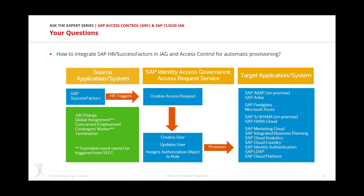Regarding HR SuccessFactors integration — in Access Control we have HR triggers that handle the joiner, mover, leaver process. If an employee joins the company, user accounts are created; if they change jobs, we do a user access review; if someone leaves, the user account is terminated. Many want to automate those processes, and in Access Control many have done that with the HR trigger. If you move to SuccessFactors, you can still do that — SuccessFactors can be directly connected to Access Control for risk analysis, provisioning, and the HR trigger.